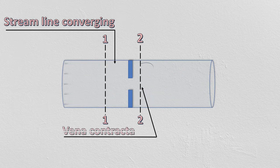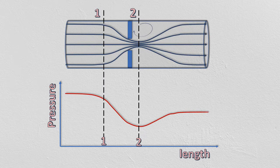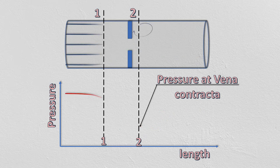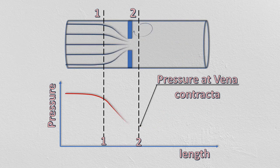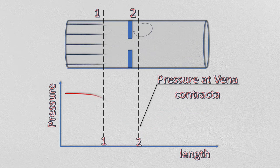If we draw a graph between pressure and pipe length, you can see that at vena contracta, pressure reduces to minimum value and hence velocity reaches maximum value.